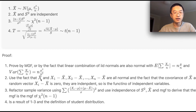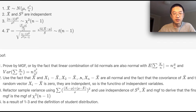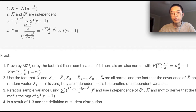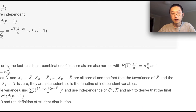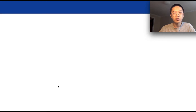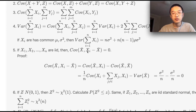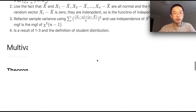We use the fact that the sample mean and the vector (X₁ − X̄, X₂ − X̄, ..., X_n − X̄) are jointly normal, since they are linear combinations of normal random variables. We already proved that the covariance of the sample mean and (X_i − X̄) is zero, so we know the covariance is zero.